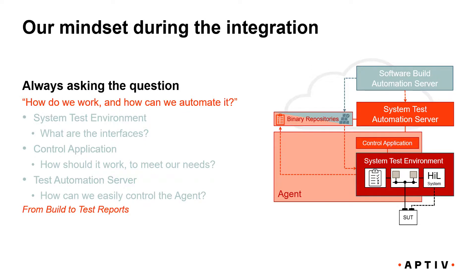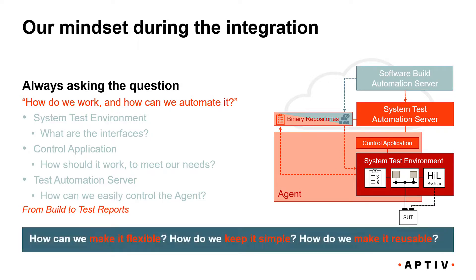In all of these layers, we have to ask ourselves: how do we work and how can we automate it in such a way that we make the approach flexible enough so that our backbone — the cloud infrastructure — does not care what project we are in? How can we make it flexible so that we control the system test environment independent of the project? How do we keep it simple enough to maintain the environment easily throughout the lifecycle of a project, and once a new project starts, how can we reuse what we have already implemented previously?